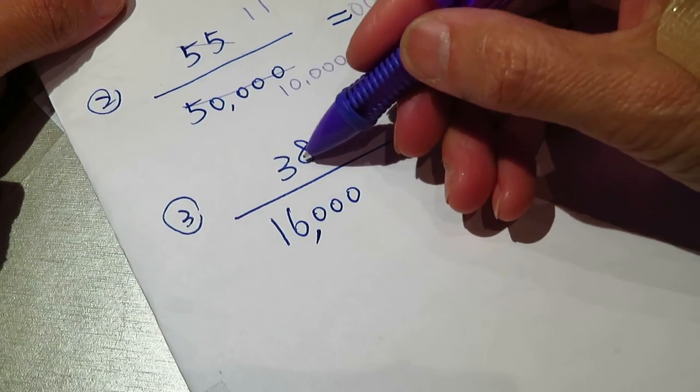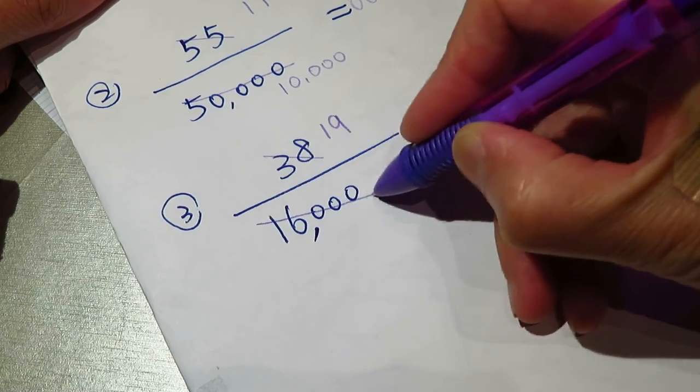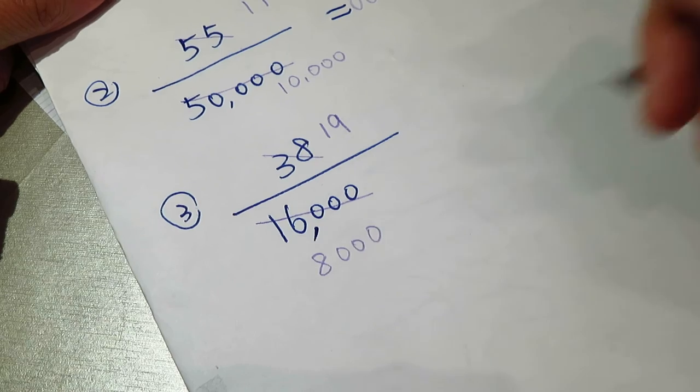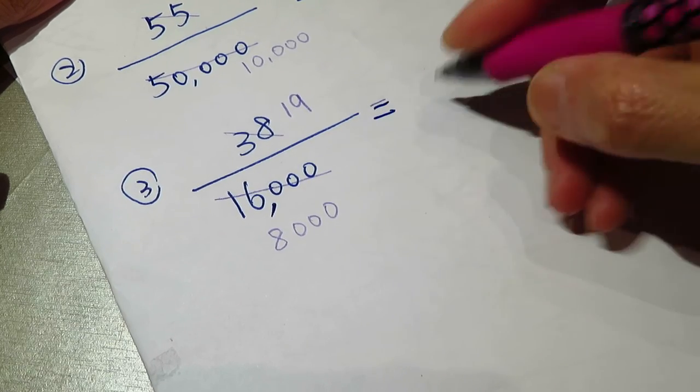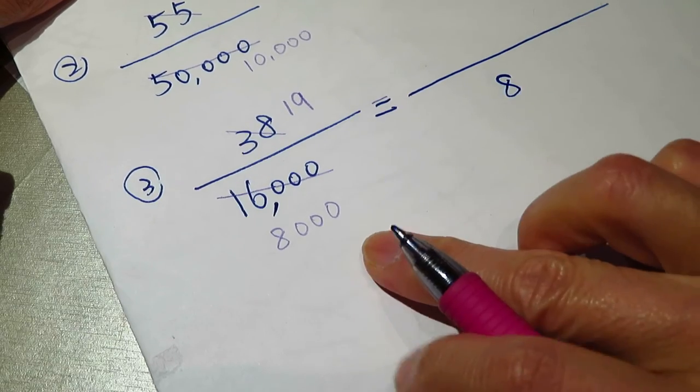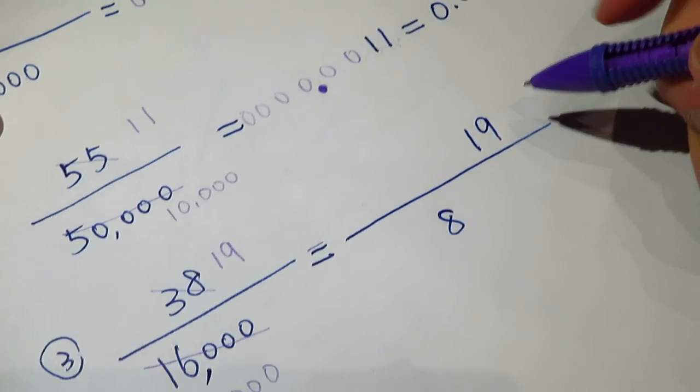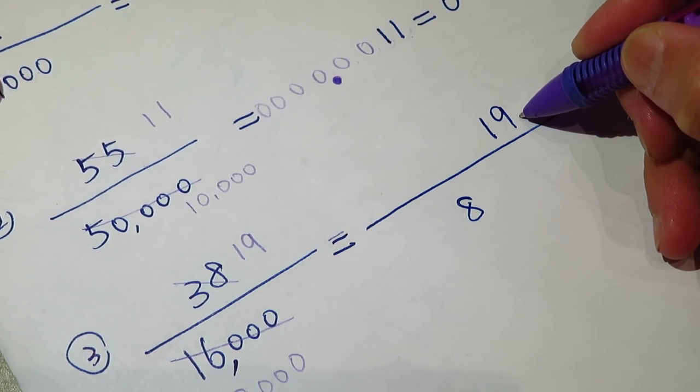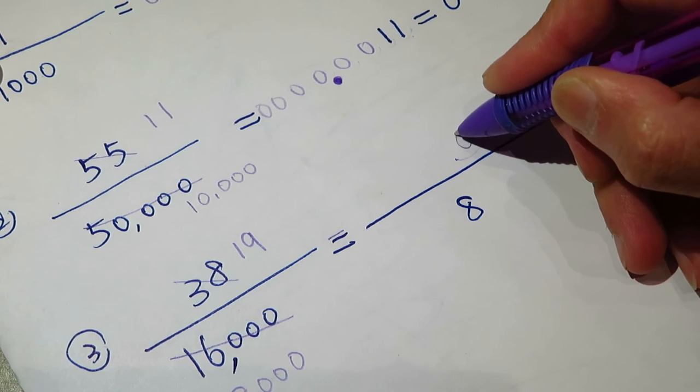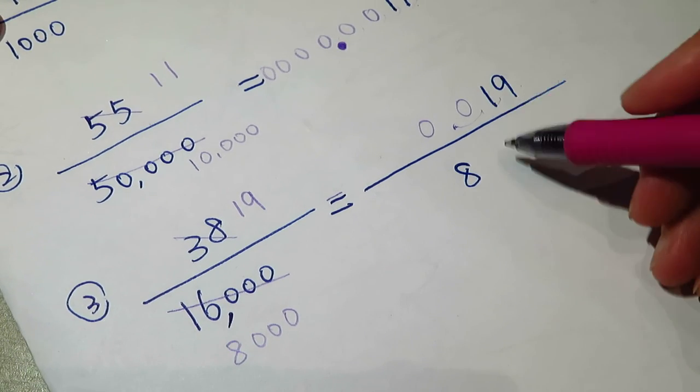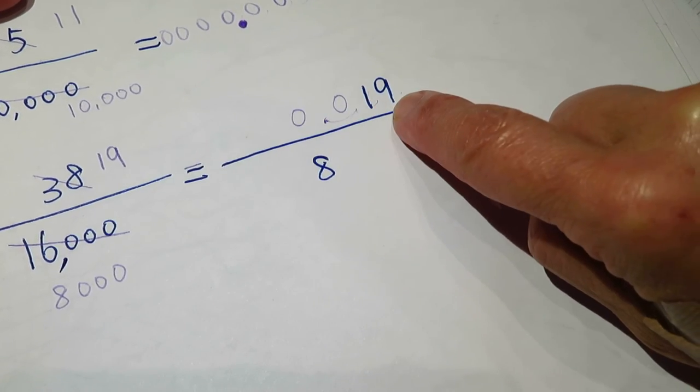This one is a little bit more complicated. 8 is an even number, divided by 2 to begin with, so it becomes 19. And 16,000 divided by 2 is 8,000. I can change it into 8 divided by 8: 1, 2, 3, three zeros on top. I need to move three zeros. Decimal point here, 1, 2, 3. So it will be 0.019 divided by 8.